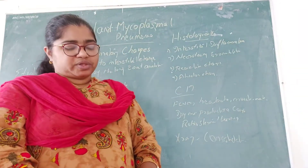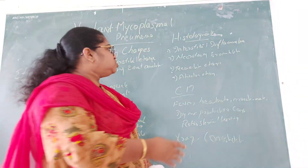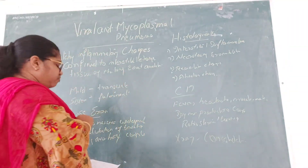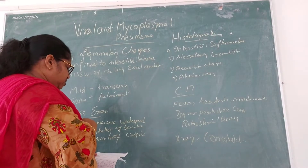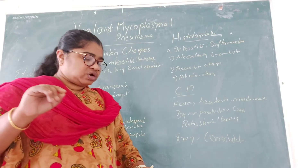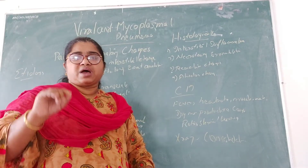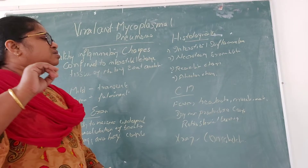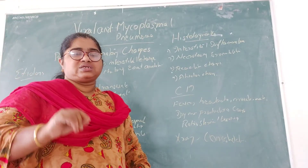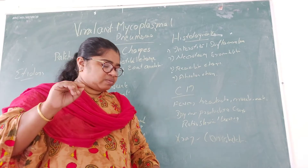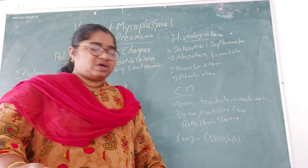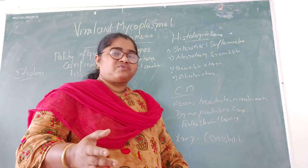Now we will see about histopathology. Histologically, there are four types of changes. First is interstitial inflammation — the alveolar sacs will get thickened due to edema and inflammation. Because of the edema and existing congestion, interstitial inflammation will be present.